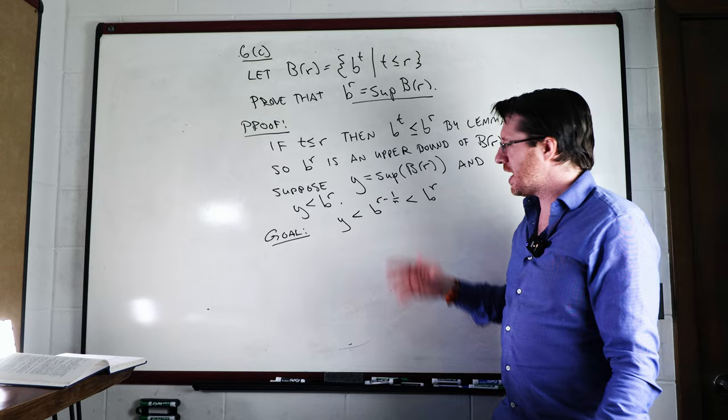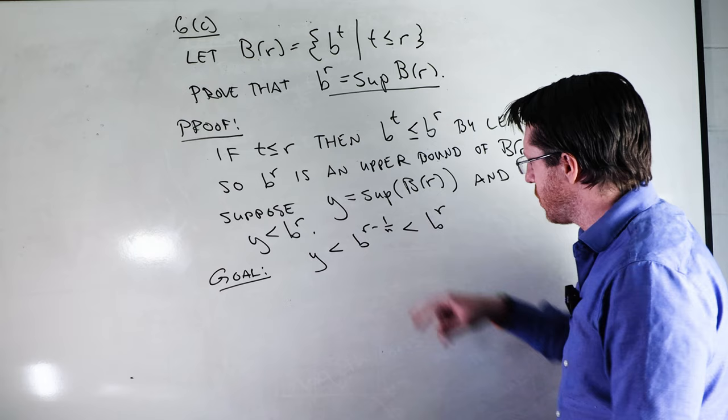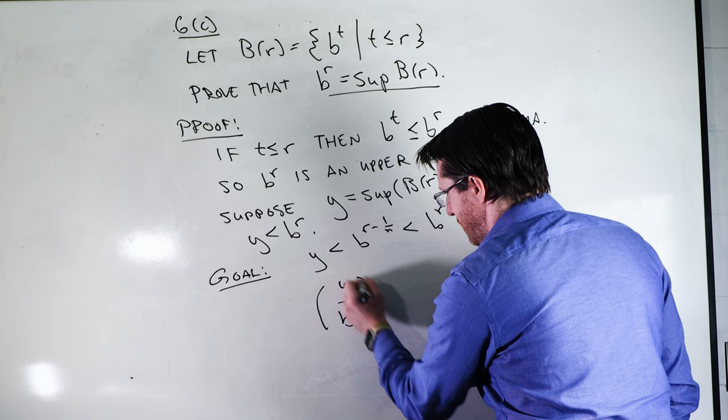Saying N is large enough for integers N in the real numbers, that should really cue you to what is called the Archimedean property. This is something in an exponent. So that doesn't necessarily work or at least not directly from the Archimedean property.